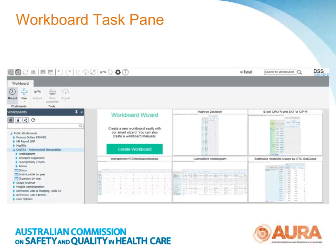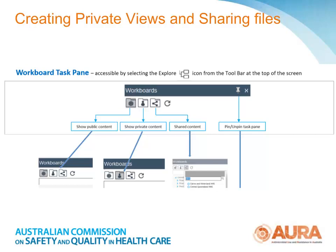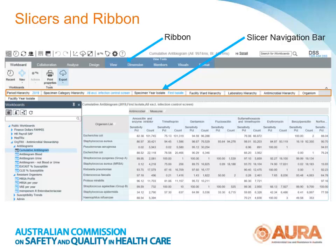If the pane is taking up too much room it can be hidden by clicking on the explore workboards icon or the X on the right-hand corner to remove. In the private content area you can create a folder structure in which to save and organise the views you have created. You can name the folders and views you create and change the names after they have been saved. You can share a view or workboard you have created with other users — you must first have saved it in your private content area. The slicer navigation bar lists all the slicers available in the workboard to slice and dice the data.